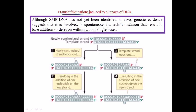Sometimes inside the cell the formation of slipped DNA is really important to incorporate mutations, because mutations are key players in gaining variation. These variations are essential for surviving natural selection. It is all about maintaining DNA structure and DNA diversity within a cell throughout evolutionary history.